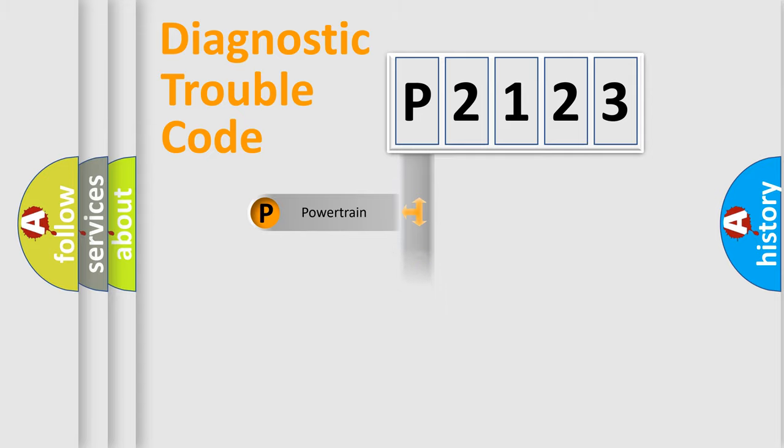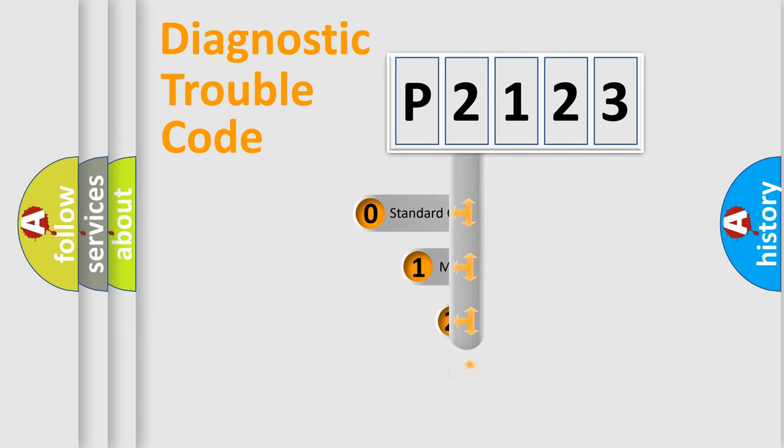We divide the electric system of automobiles into four basic units: Powertrain, Body, Chassis, and Network. This distribution is defined in the first character code.